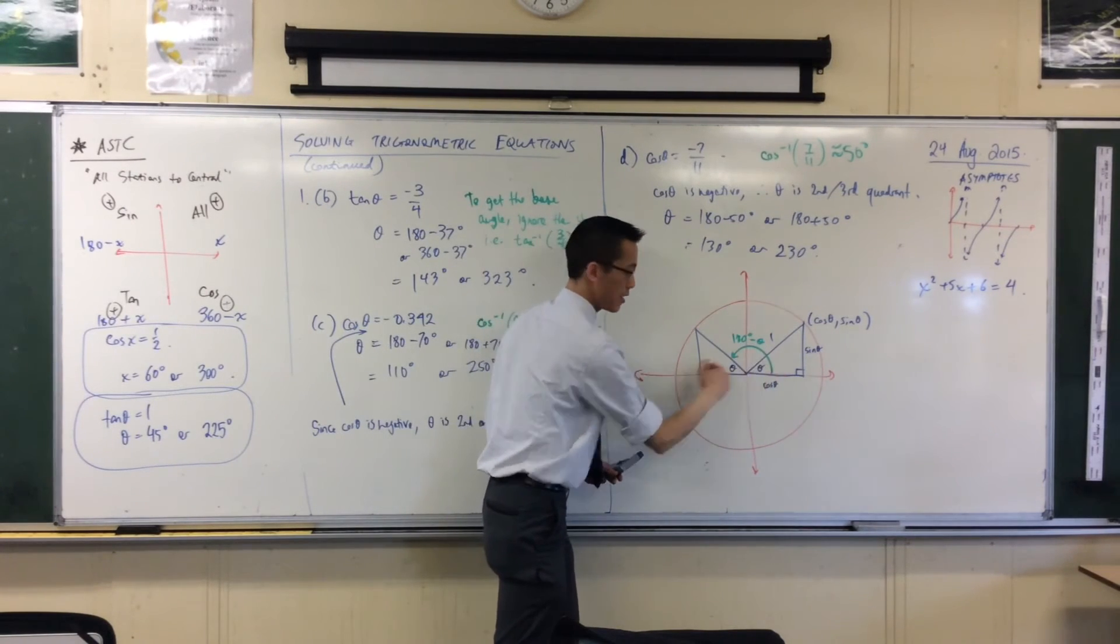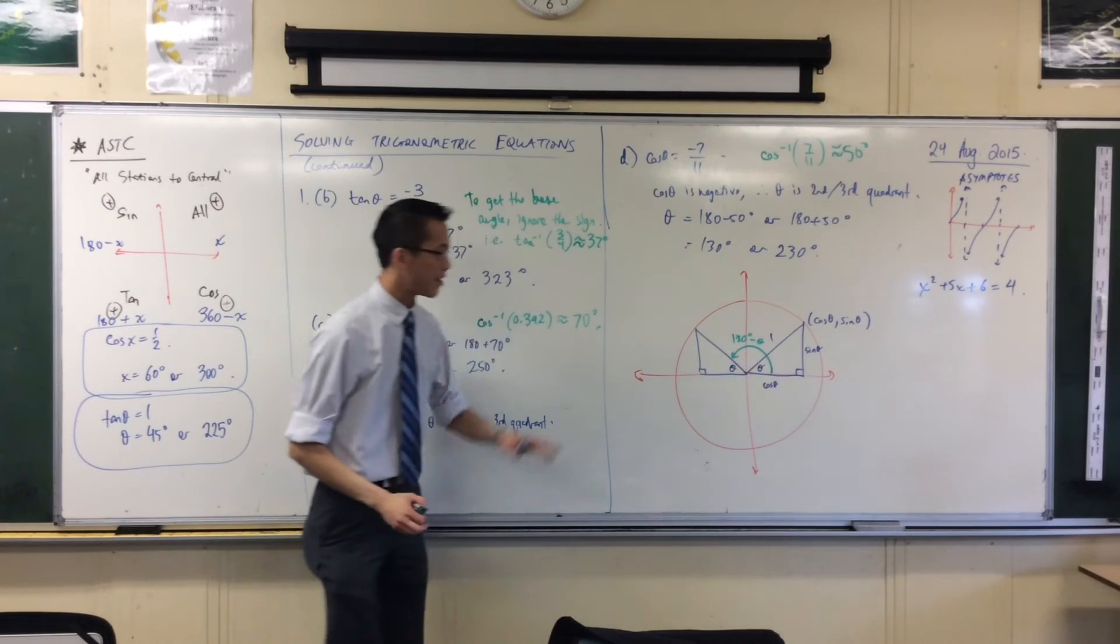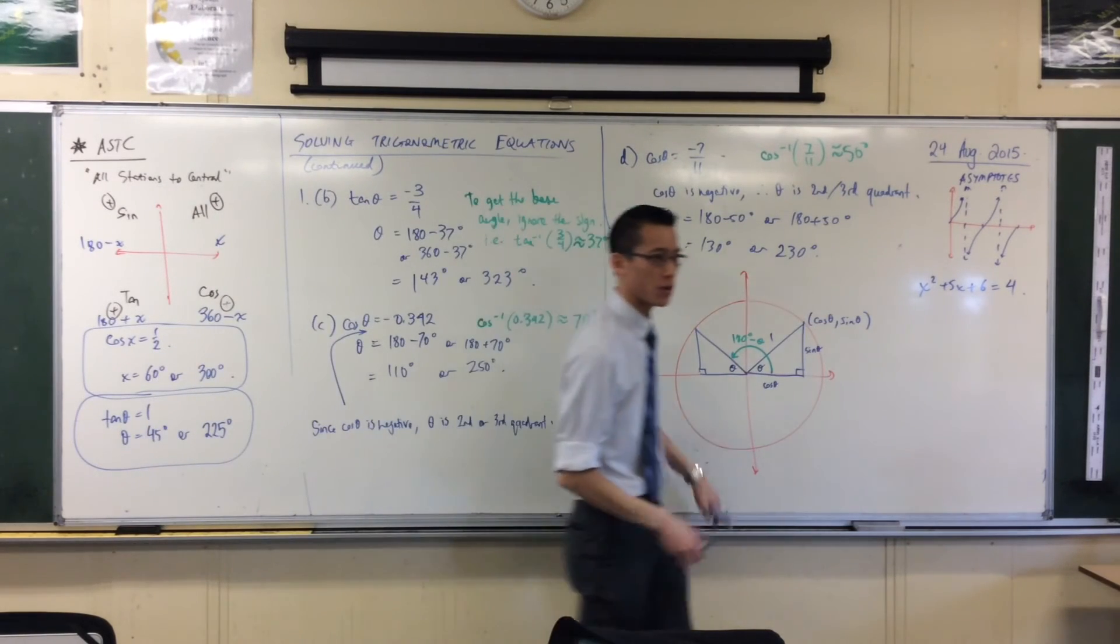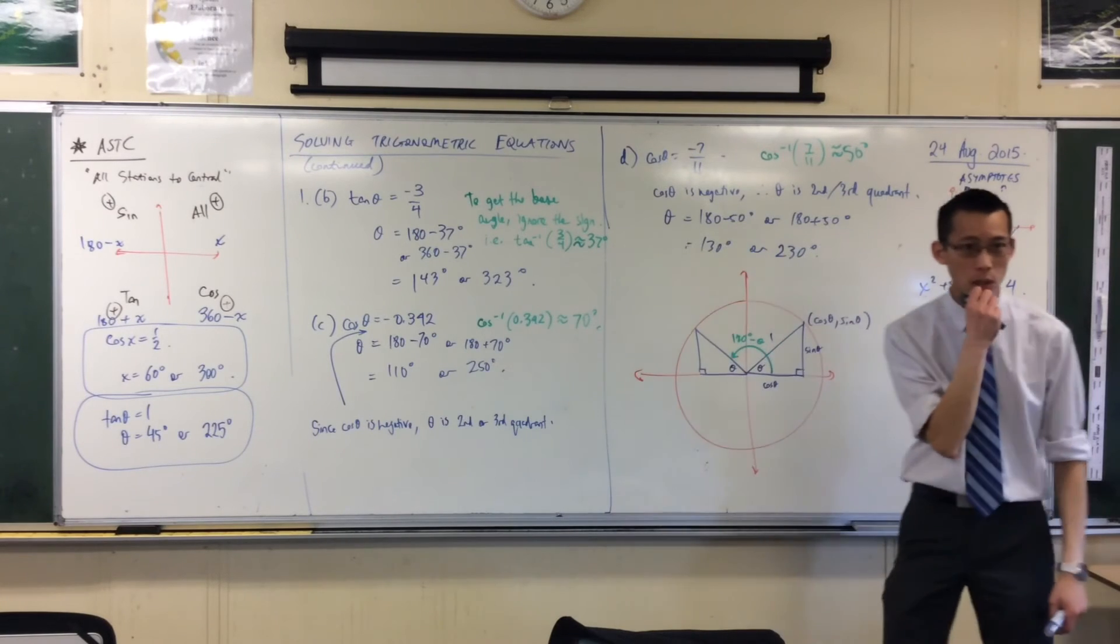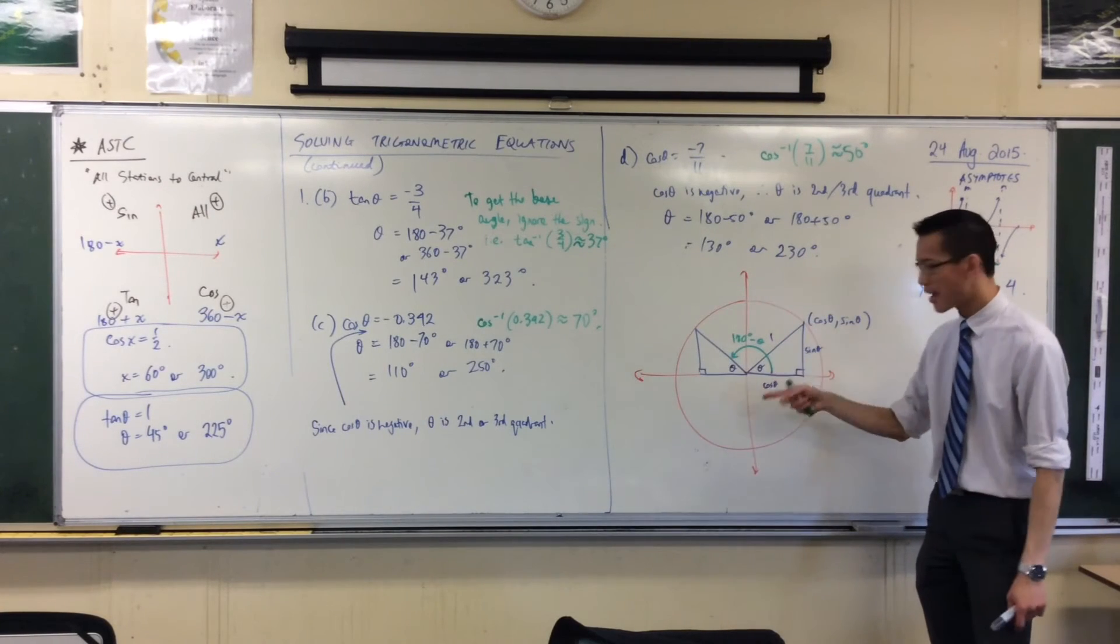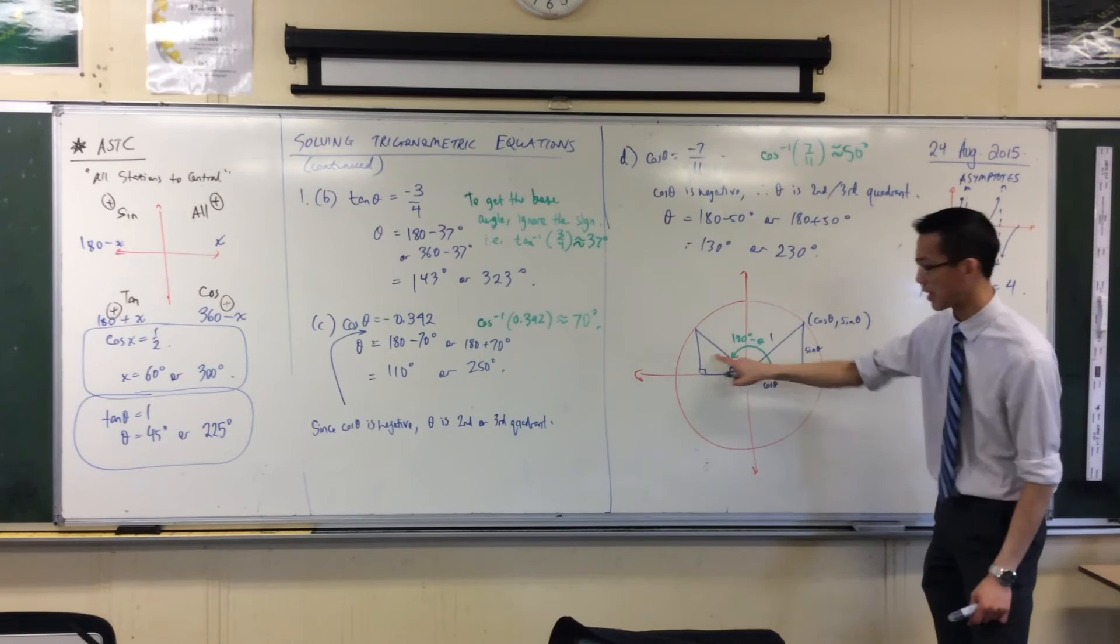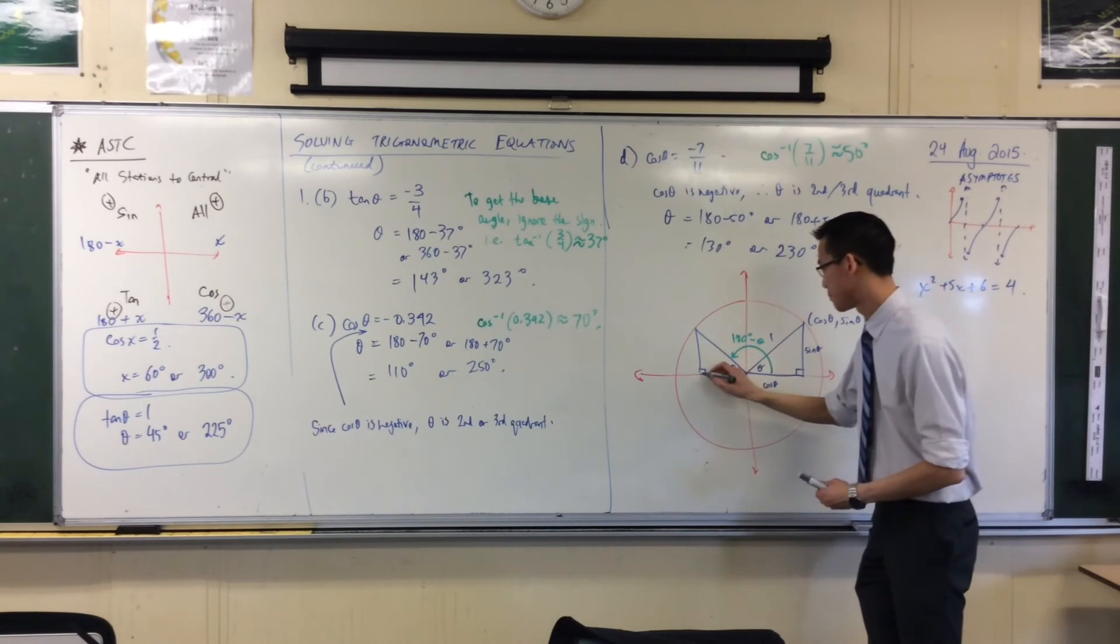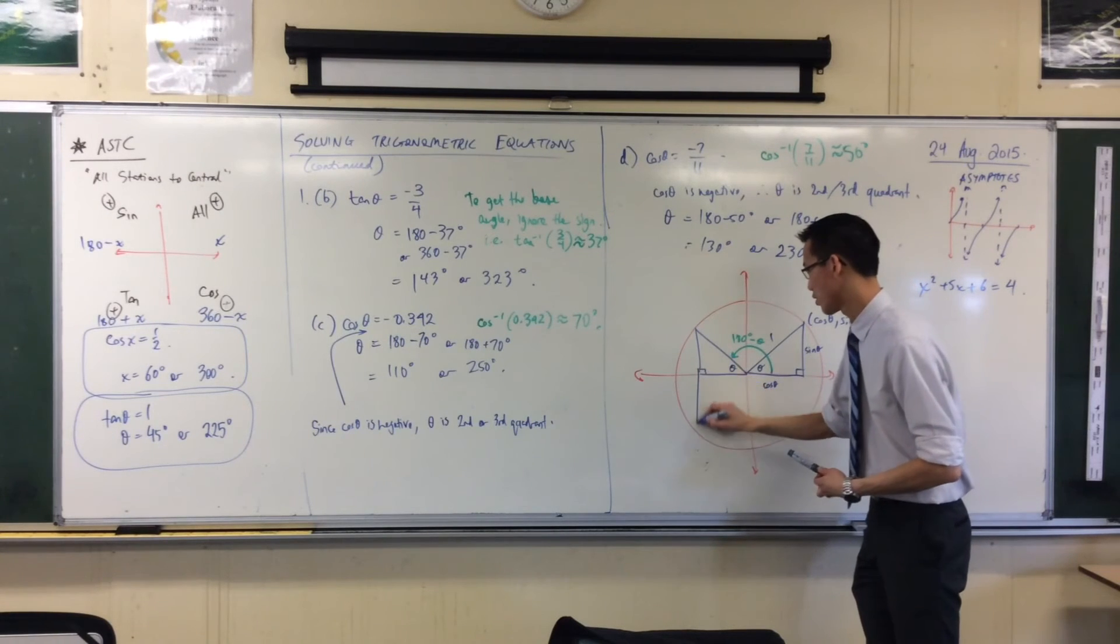So, I've got theta, I've got 180 minus theta, they're supplementary, okay? Now, that's in the second quadrant. When I come down to the third quadrant, what will the triangle look like, okay? Now, the triangle is, again, just like this was a reflection over here, okay? This is going to be a reflection down this way. Oops, wrong call.